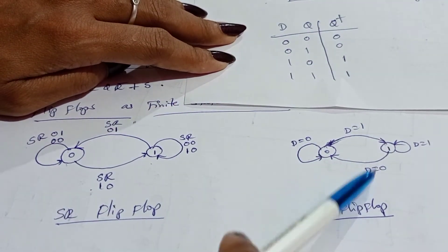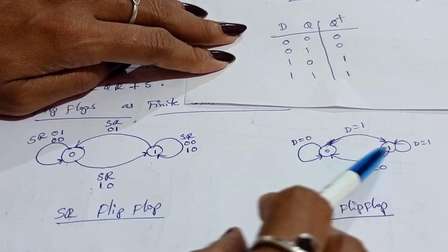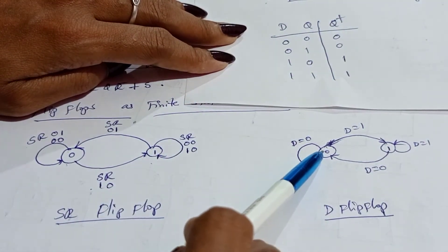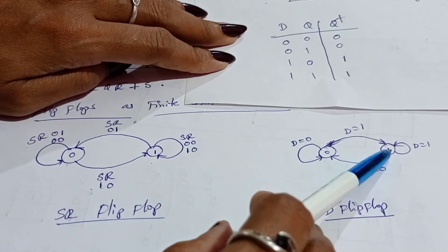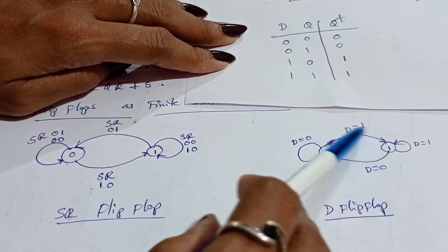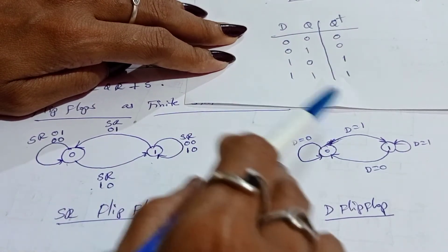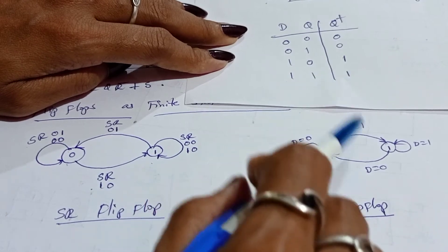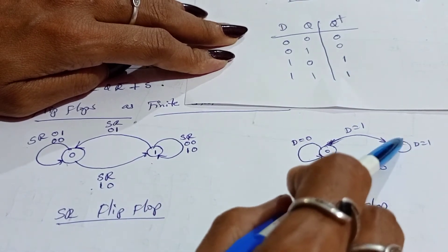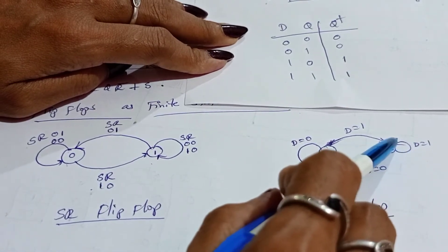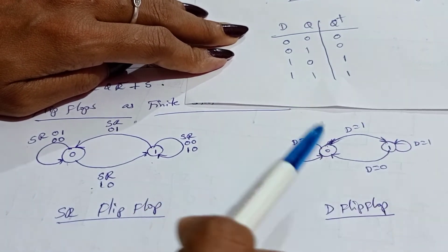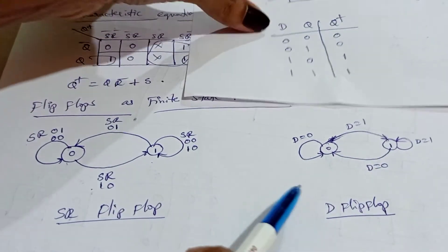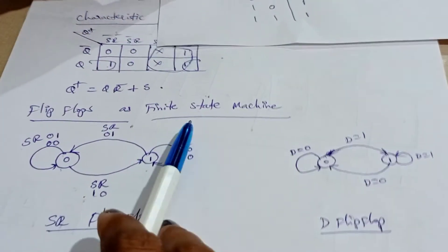When D is 1, it is in state 0, changing to state 1. And when D is 1 and in the same state, Q is state 1 and the next state Q+ is also the same state. This is the finite state machine for D flip-flop.